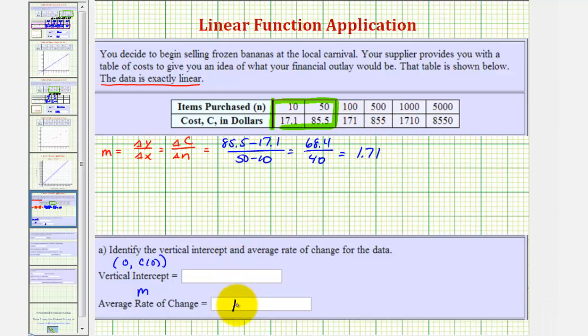So this is the average rate of change. To understand what this means, it's often helpful to write this as a fraction, or in the form 1.71 divided by 1, where the numerator represents the change in the cost, and the denominator represents the change in n, the change in the number of items purchased.